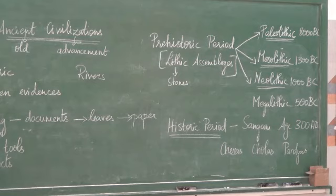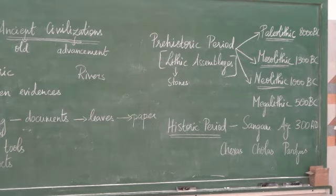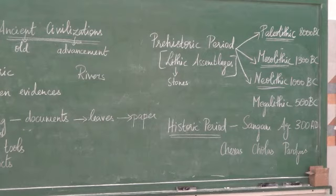Paleolithic from the year 8000 BC, Mesolithic 1300 BC, Neolithic 1000 BC, and Megalithic 500 BC. BC means before the death of Christ, AD means after the death of Christ. The prehistoric period mostly consists of the BC era. In the historic period, we have the Sangam age from the year 300 AD, during which three important kings were there — the Cheras, Cholas and the Pandyas.